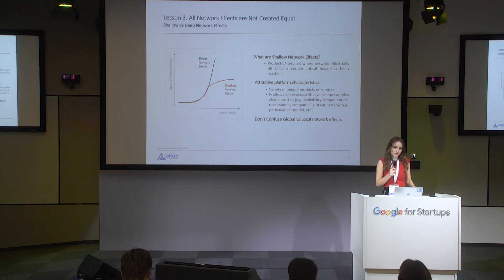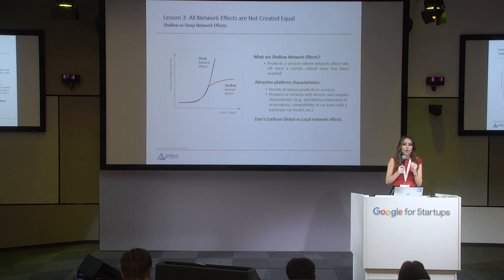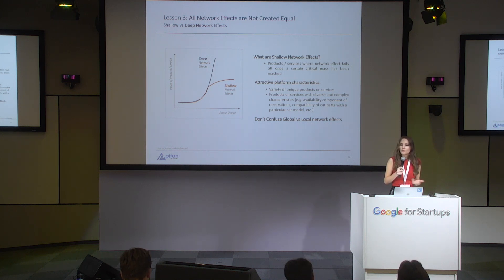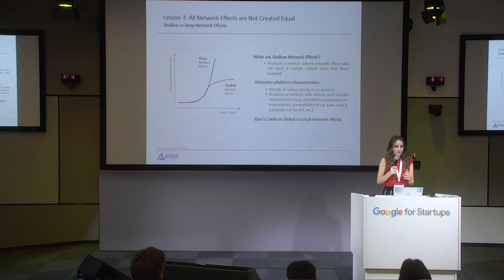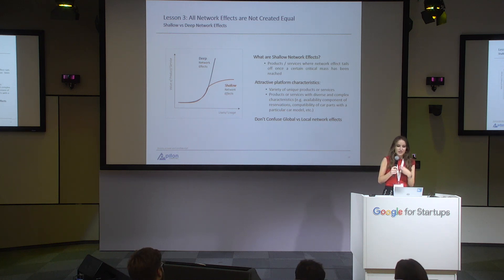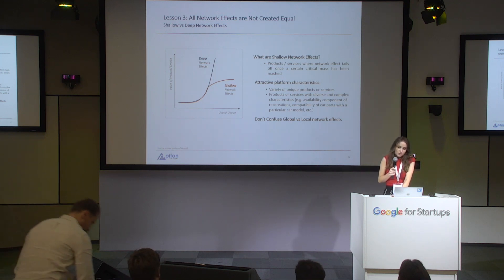What are the characteristics that make for deep network effects? Variety of products and services is one — and even better, very diverse and complex characteristics of those products and services. A great example is restaurant booking: say I need a table at 7:30 for four people in a particular area of Warsaw, at a Chinese restaurant with good reviews and a vegetarian option. There are so many requirements in one booking. That platform needs all the liquidity of every Chinese restaurant in the area for me to have a good experience — that's a deep network effect, because next week I might need a Peruvian restaurant.